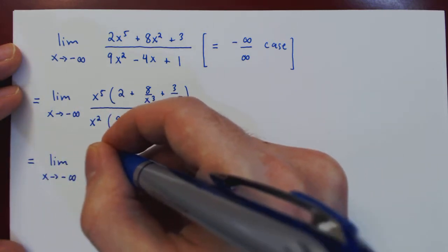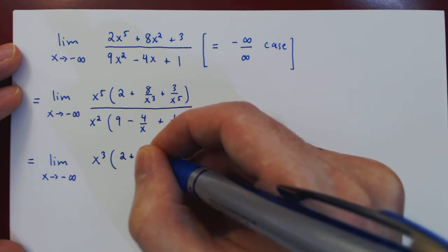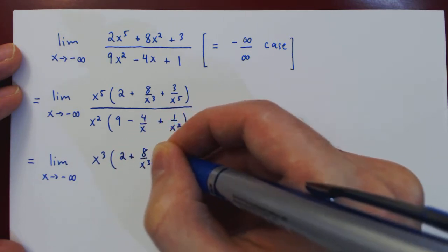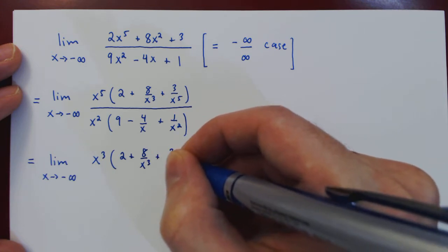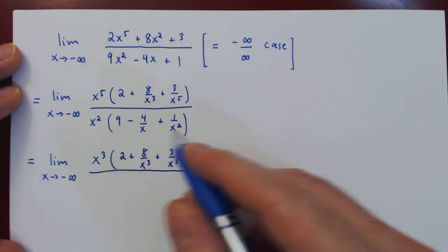So on the numerator x cubed, then times the second term does not change. And on the bottom, all that remains is the second term.